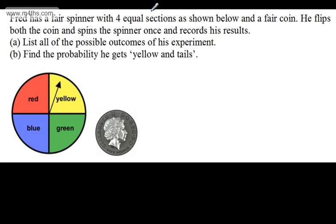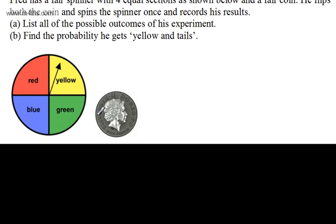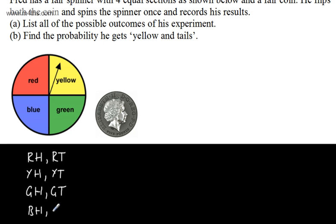Fred has a fair spinner with four equal sections — red, yellow, green, and blue — and a fair coin. He flips the coin and spins the spinner once and records his results. We're asked to list all possible outcomes. The combinations are: red and head, red and tail, yellow and head, yellow and tail, green and head, green and tail, blue and head, and blue and tail. These are all possible outcomes of this experiment.